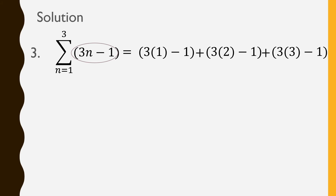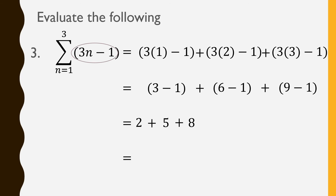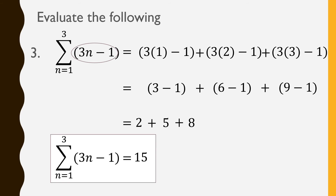Following MDAS, we have 3 times 1 is 3, minus 1; plus 3 times 2 is 6, minus 1; plus 3 times 3 is 9, minus 1. Proceeding with subtraction: 3 minus 1 is 2, plus 6 minus 1 is 5, plus 9 minus 1 is 8. Then adding them all up: 2 plus 5 plus 8 is 15. In other words, the sum of 3n minus 1 as n goes from 1 up to 3 is just 15.